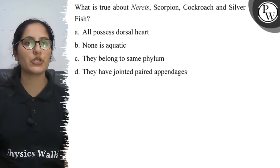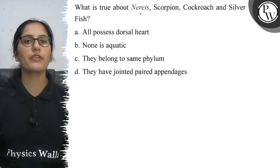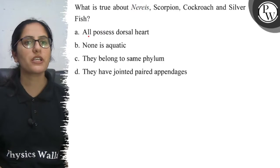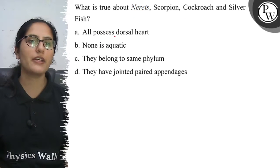Hello guys, let's see the question. What is true about Nereis, Scorpion, Cockroach and Silverfish? Option A, all possess dorsal heart.